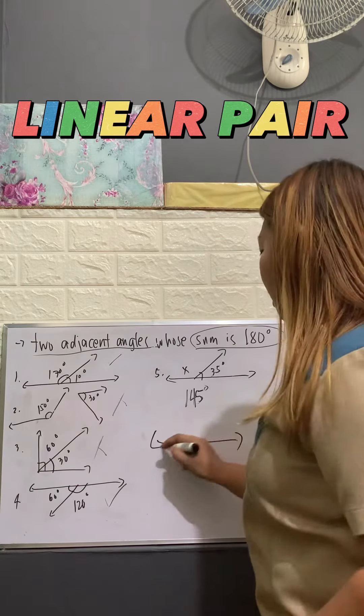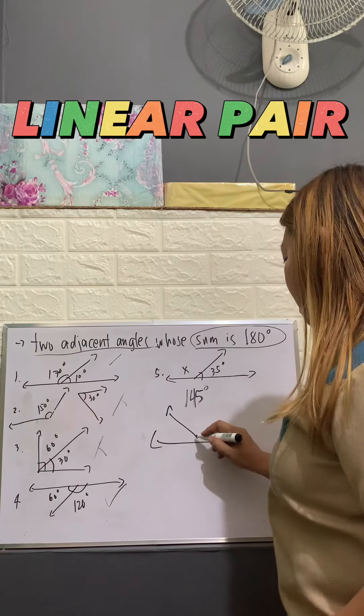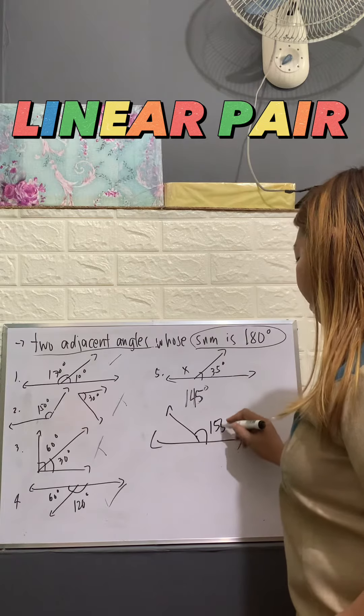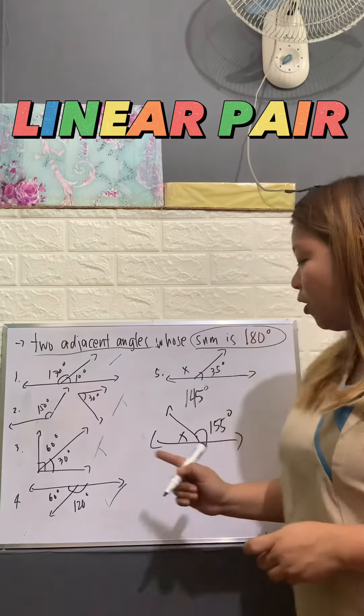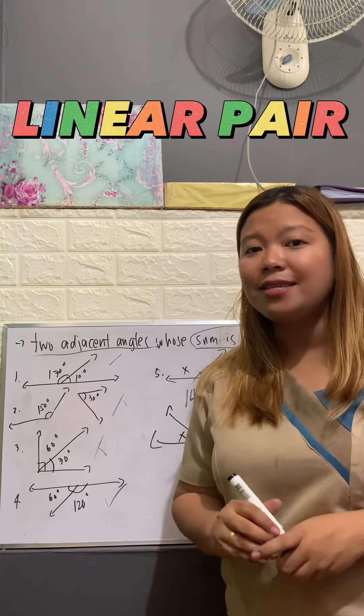Now, how about if you have a linear pair? And suppose this is 155 degrees, what will be the value of our X? Comment your answer in our comment section and please like and share this video.